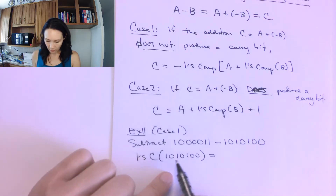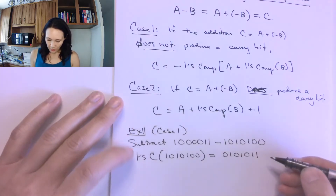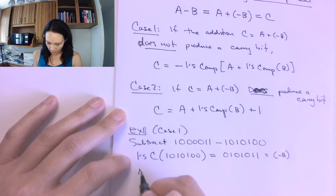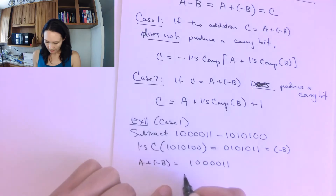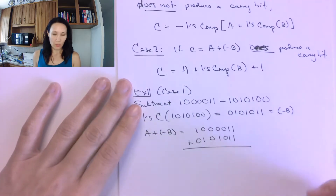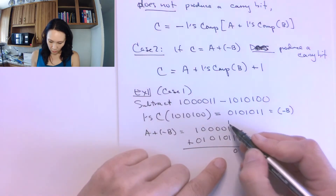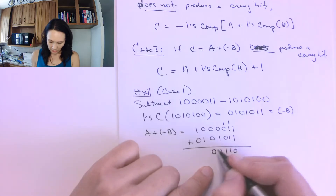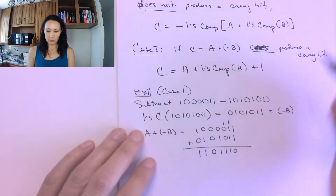So now I have an addition problem: a plus negative b equals 1000011 plus 0101011. I stack these up and do column-by-column binary addition. Working right to left: 1 plus 1 is 0 carry 1; 1 plus 1 plus 1 is 1 carry 1; 1 plus 0 is 1; 0 plus 1 is 1; 0 plus 0 is 0; 0 plus 1 is 1; 1 plus 0 is 1. The result is 1101110, and there is no carry at the end, so this falls under case one.